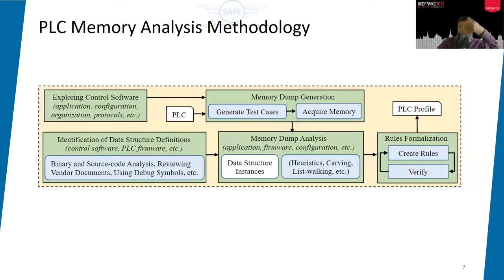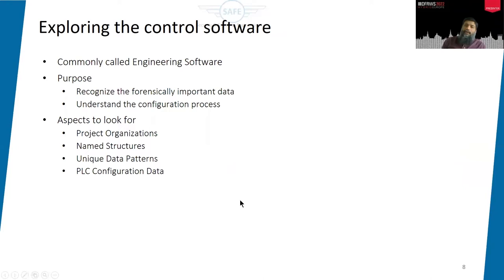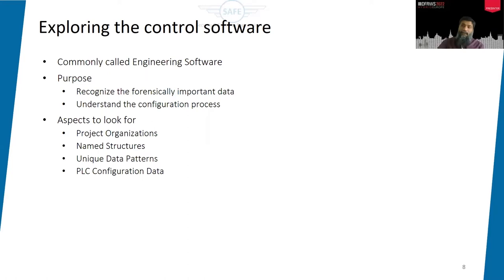Exploring the control software serves two purposes. The first is to recognize forensically important data. Different vendors have different kinds of organization of PLC projects, different logging information, and configuration data. You examine what different kinds of information are available to be programmed for that particular PLC, which gives an idea of what to expect in a memory dump. This study also helps with the configuration process since we have to program the PLC and read the memory.